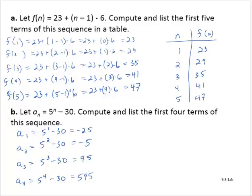When we list the terms of a sequence, we write them comma separated. So the first four terms of the sequence would be: negative 25, negative 5, 95, 595.